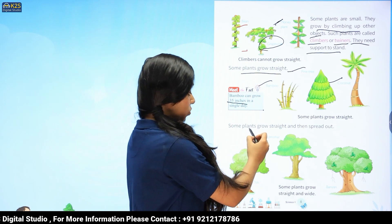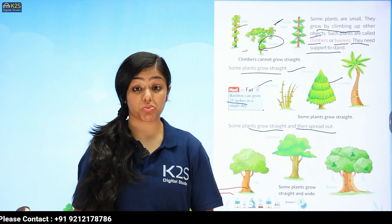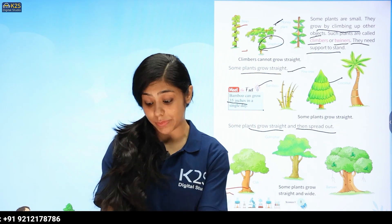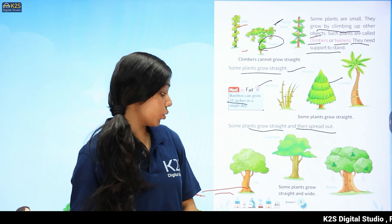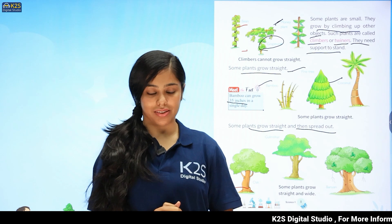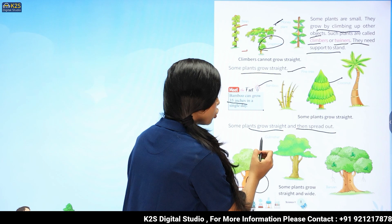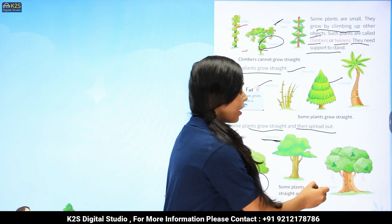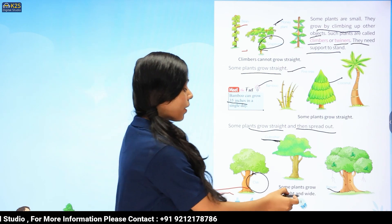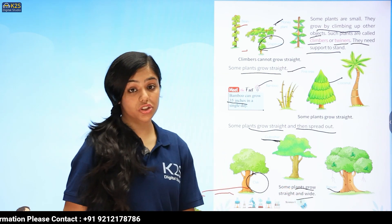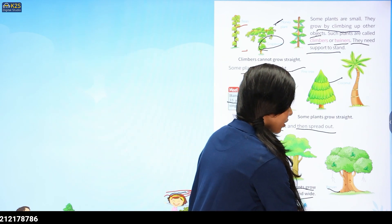Some plants go straight and then separate out. Aise koun se plants hoti hai jo straight grow hoti hai aur zameen pe bhi chalte hain? Woh hoti hai hamare creepers. Koun se hoti hai? Creepers. Here we have our example: oak, gulmohar, and banyan tree. Some plants grow straight and wide, inko hum bolte hai, creepers. Now, let's move to the next part.